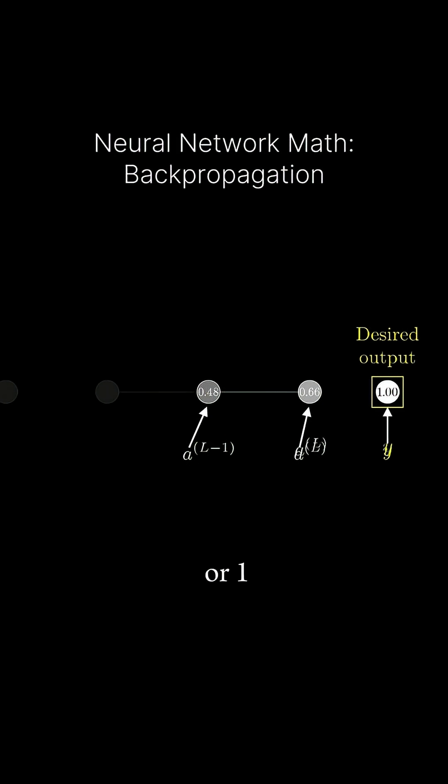For example, Y might be 0 or 1. So the cost of this simple network for a single training example is AL-Y squared.